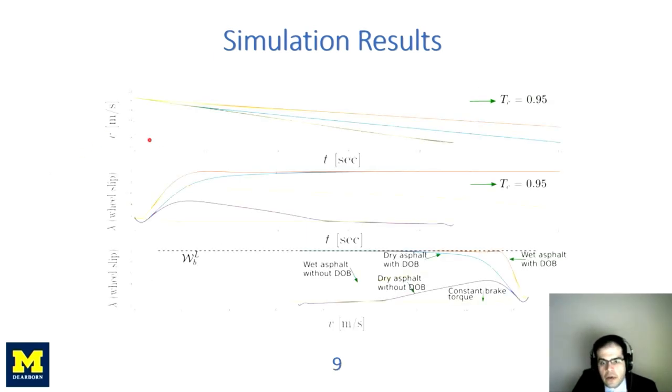Here are the speed versus time profile, wheel slip versus time profile, and wheel slip versus speed profile. As you can see, under a constant brake torque, the attacker has not been able to achieve wheel lockup. Now, under a predefined time controller, where there is no disturbance observer compensation, again, the attacker will fail to achieve its wheel lockup objective.